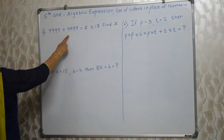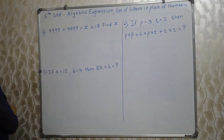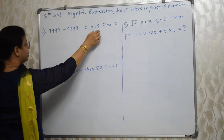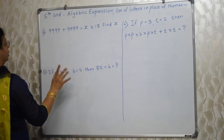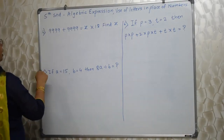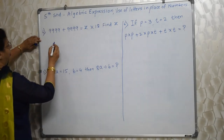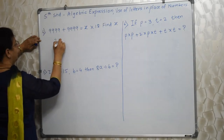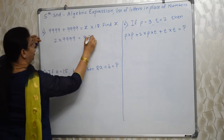Students, see this: 9999 plus 999 is equal to x into 18 — find x. Here you can add these two and then divide by 18, and you will get the answer, but time consumption will be definitely more. So I am going to share a simpler method. 9999 plus 9999 means 2 times 9999, and that is equal to x into 18.